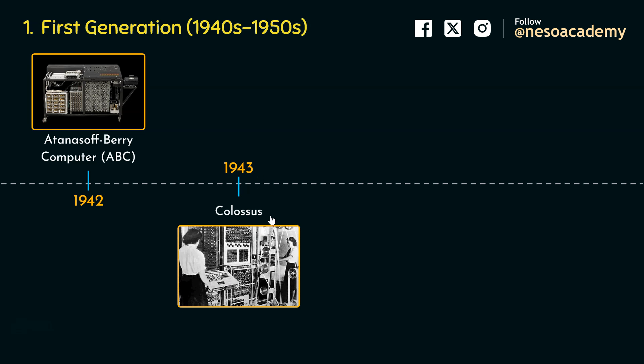Then in 1943, Colossus was developed in England by British code breakers to help the cryptanalysis of the Lorenz cipher during World War 2. It used vacuum tubes to perform Boolean and counting operations, and Colossus is still regarded as the world's first programmable electronic computer, though it didn't have the stored program concept or capability. It was programmed manually by switches and plugs.